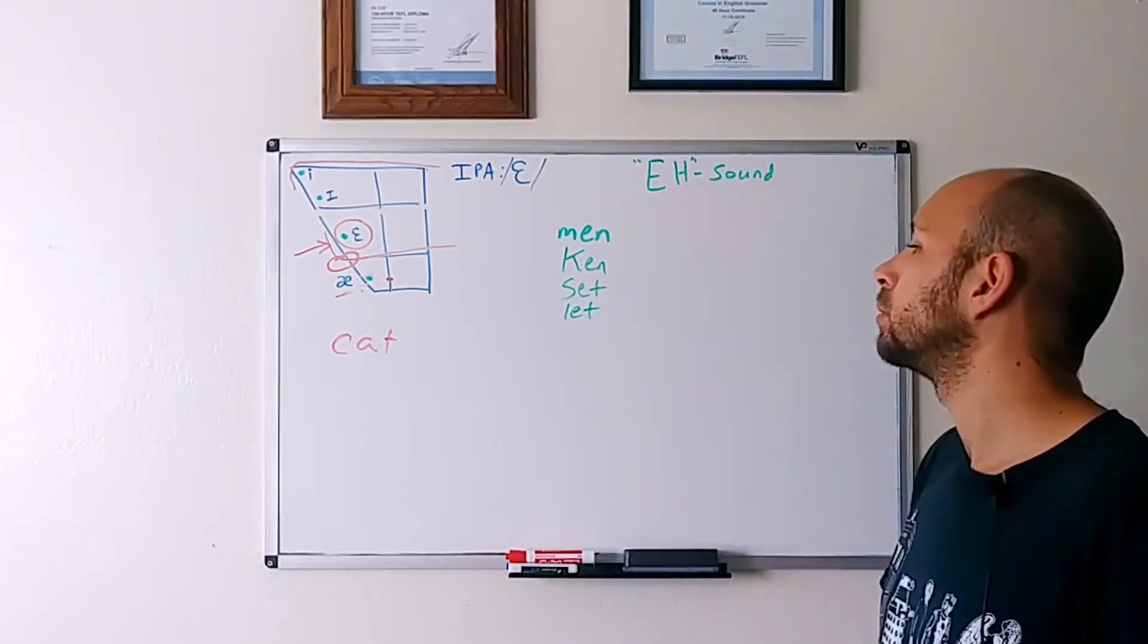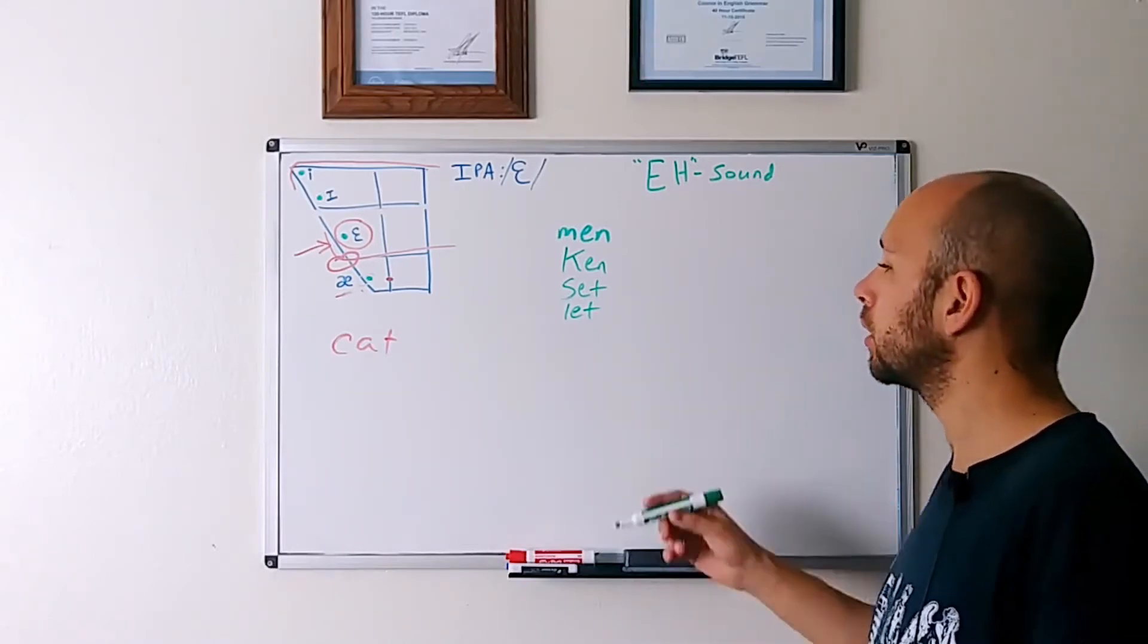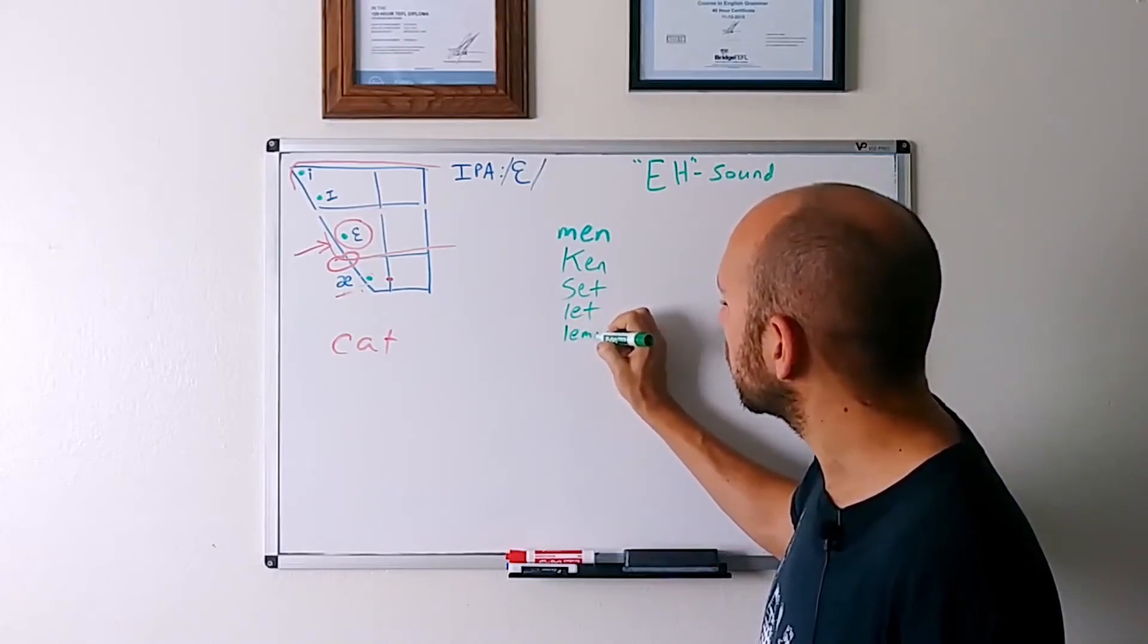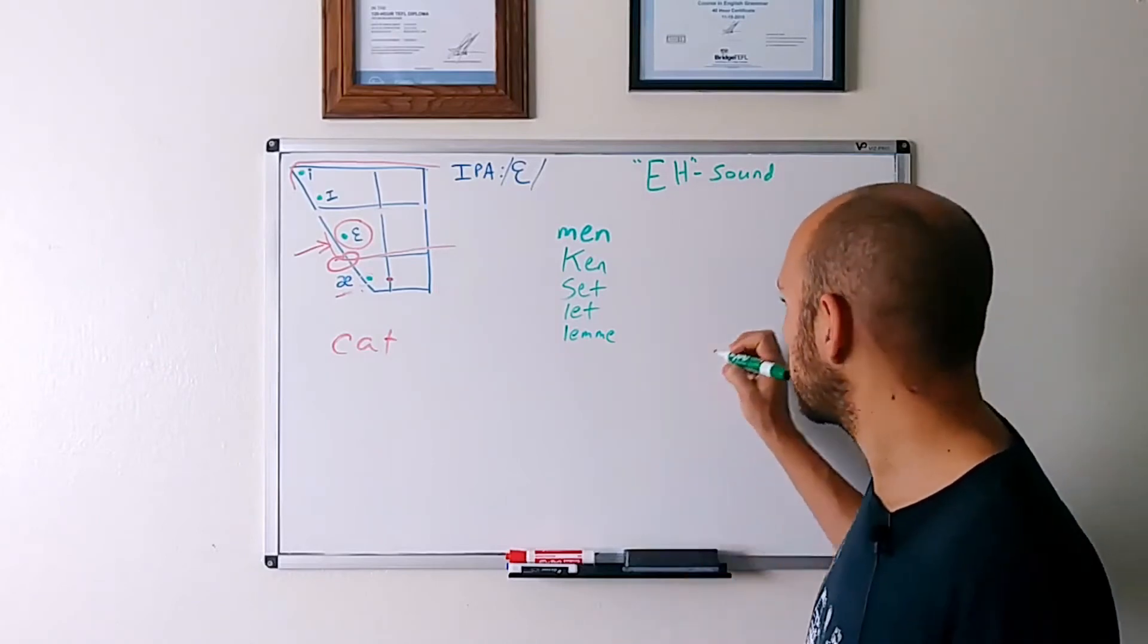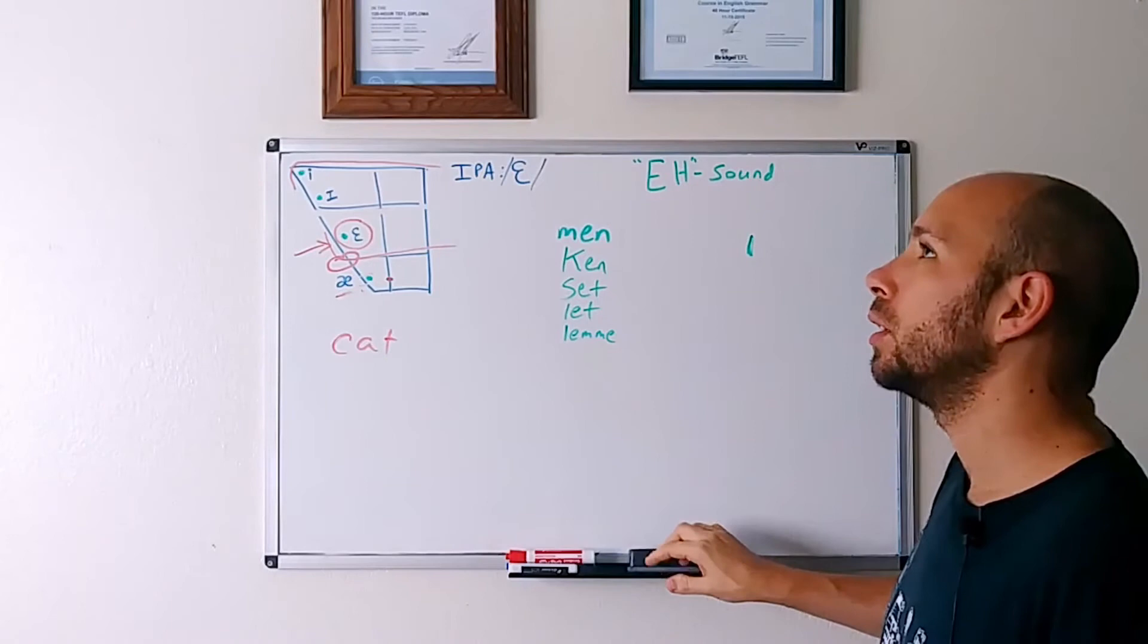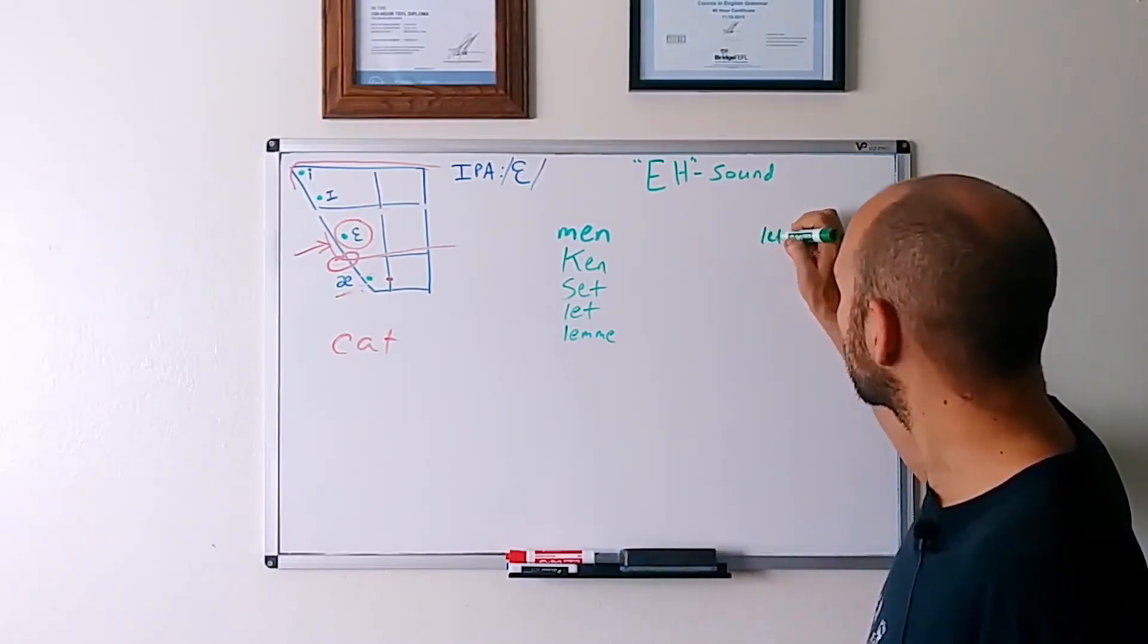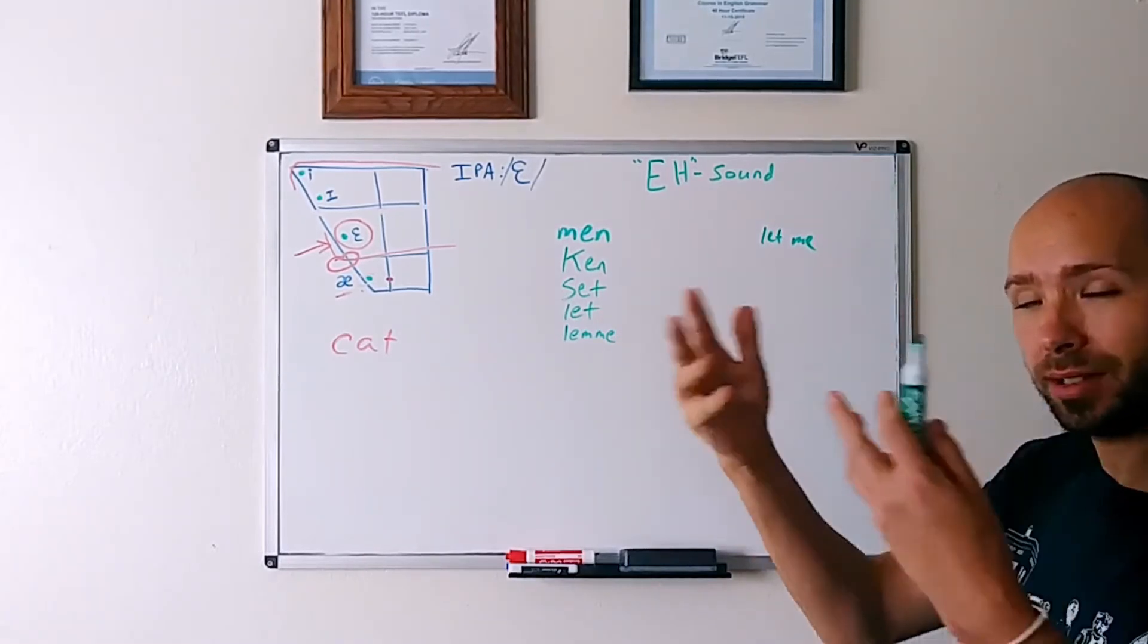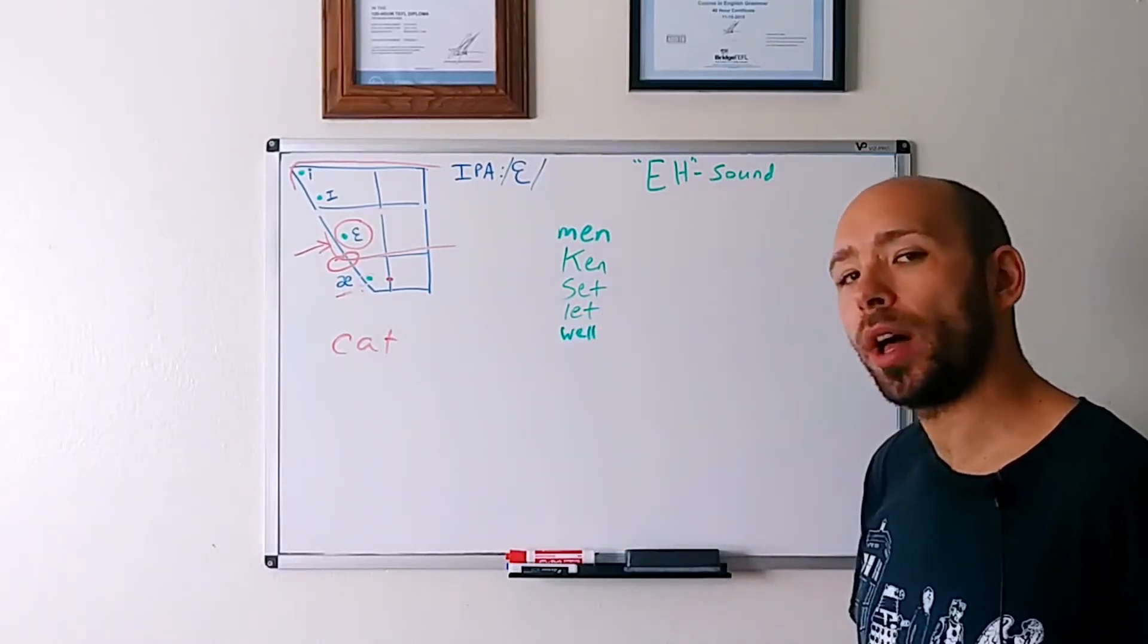Let. Let. Let me, let me, let me, which is sort of a very fast, quick, not enunciated way to say, let me, like, let me see, right? I want to see. Let me see. Well. Well.